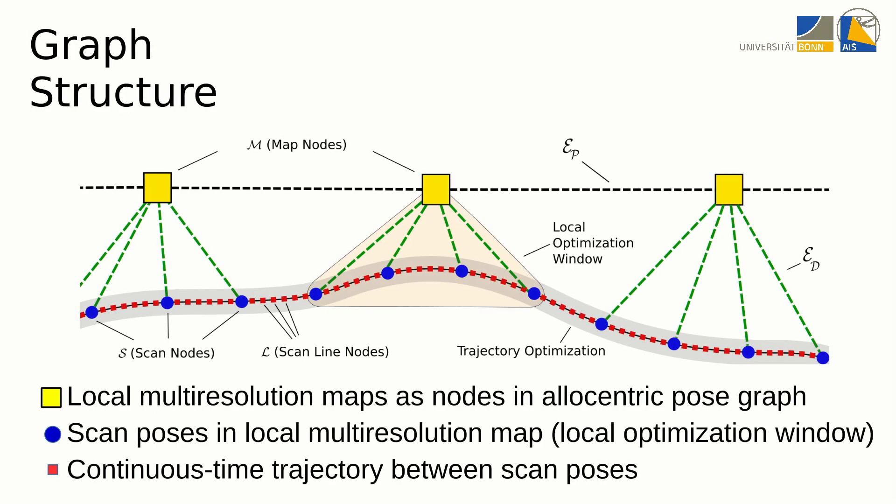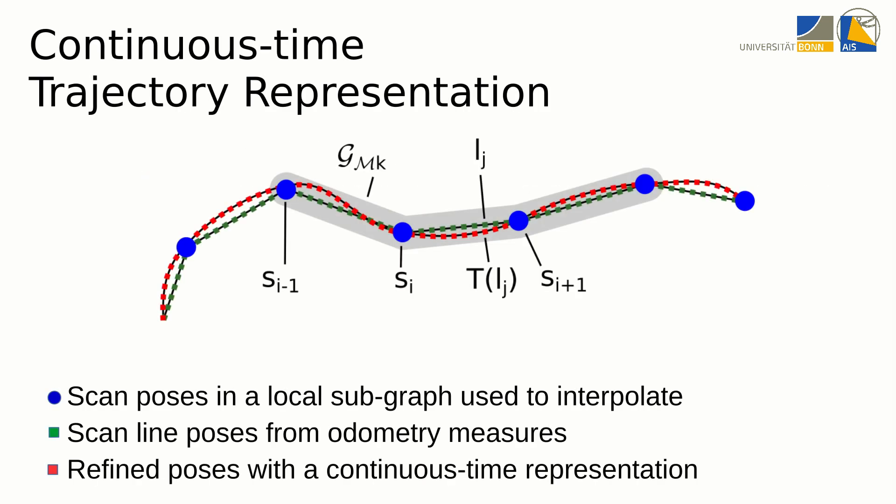By modeling individual 3D scans of a local map as a subgraph, we build a hierarchical graph structure, enabling refinement of the map in case of misaligned measurements when more information is available. In each subgraph, a continuous time representation of the sensor trajectory allows to correct measurements between scan poses.